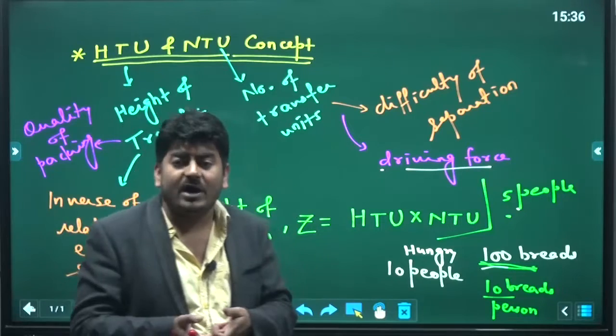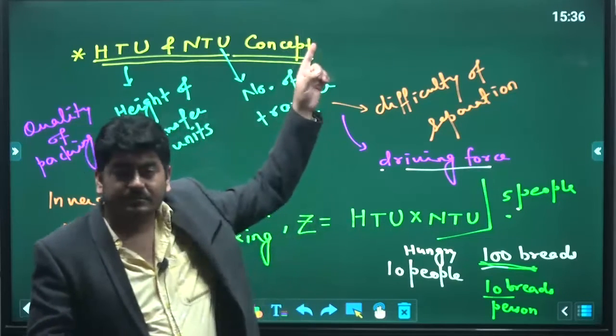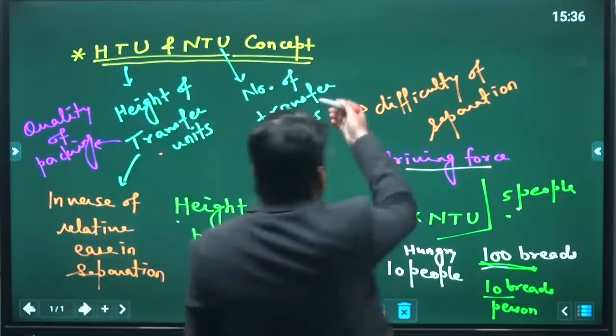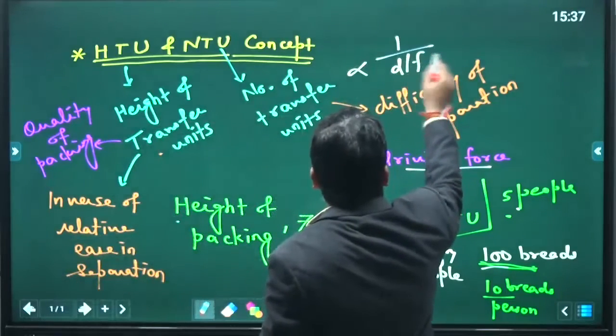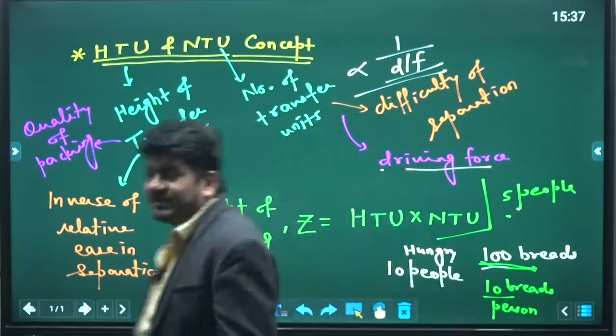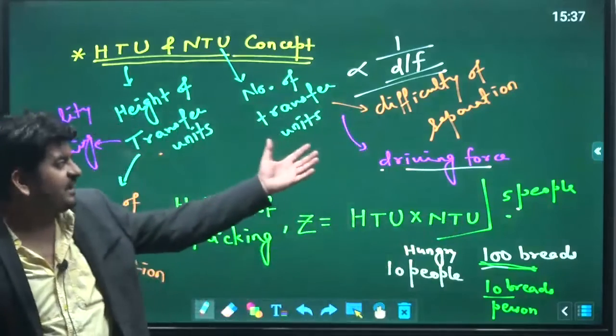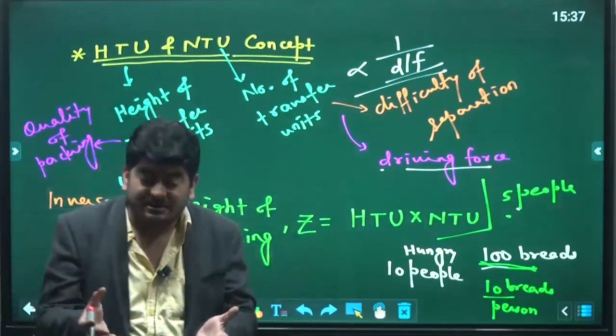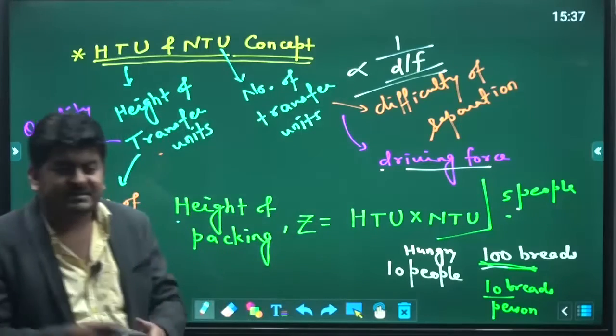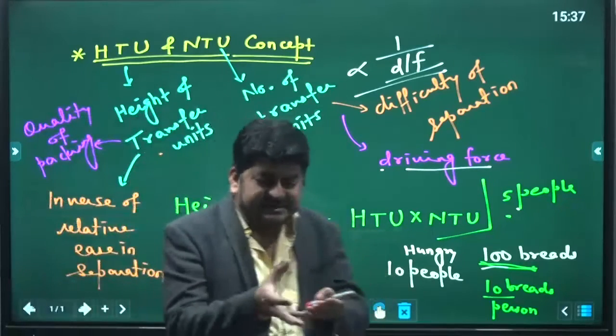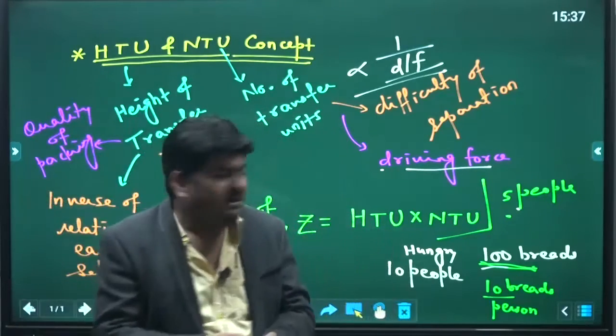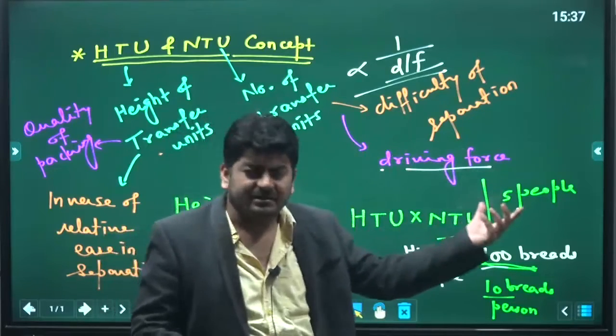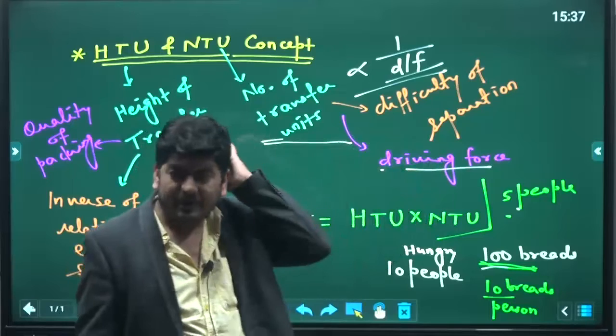Similarly, if driving force is small, how many number of transfer units will be required? More. So that is what NTU is - inversely proportional to the driving force. And it signifies the difficulty in separation. Basically what we want is we always want the driving force to be large so that in less effort, work should be done in the less number of transfer units.